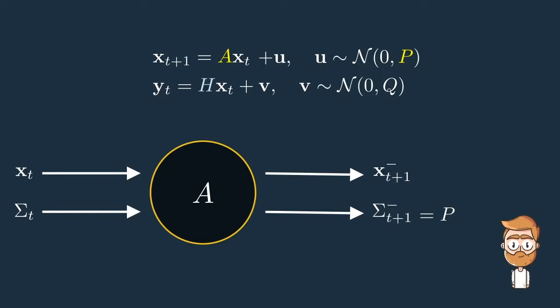In general though, sigma t would not be zero. So when you run this sigma t through the idealized system and you work out the math, you realize that we need to add an additional term A sigma A transpose.